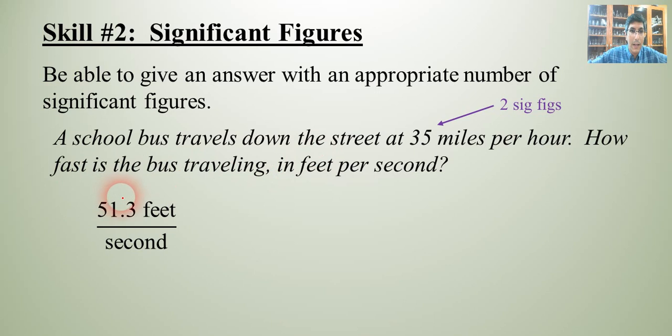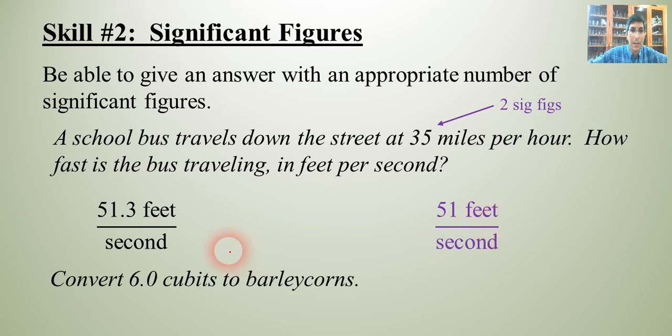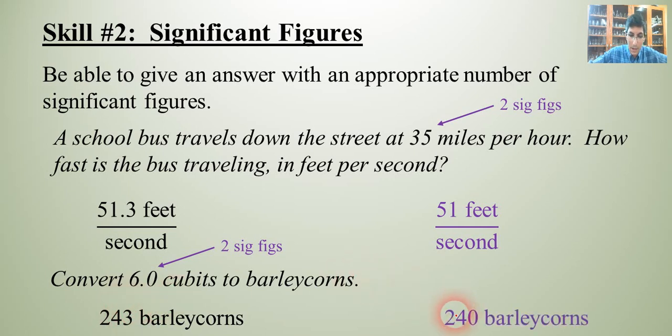So I need to round this off using that next number as a rounding help there. So 51 and then the .3. The 3 means we round down to 51 feet per second. We can say something very similar about the other problem we had. Convert 6.0 cubits to barley corns, and we said it was 243 barley corns. Well, the question has two significant figures. So it looks like our answer should also have two significant figures, shouldn't it? So I'm going to round this using that 3 to round it down. It should actually be 240 barley corns. And so being able to handle significant figures is a pretty important skill in this class.